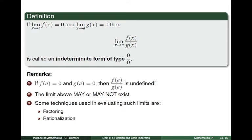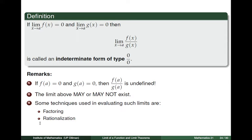Before we proceed to some illustrations, let us note the following remarks. If f evaluated at a is equal to 0 and g evaluated at a is also 0, then the fraction f of a divided by g of a is undefined. Also, the limit of f of x over g of x as x tends to a may or may not exist. When it exists, we can use the technique of factoring in evaluating limits of indeterminate form, and also we can apply rationalization. So let us now look at some examples.